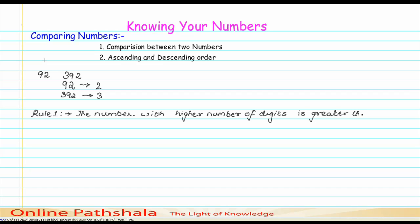So in these two numbers, 392 has three digits and 92 has two digits. Since three is greater than two, we can say that 392 is greater than 92.